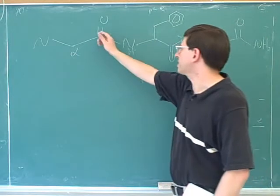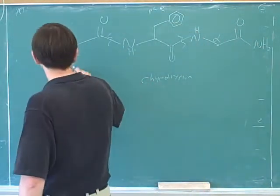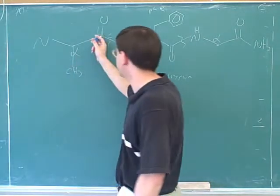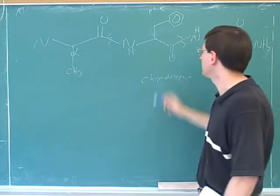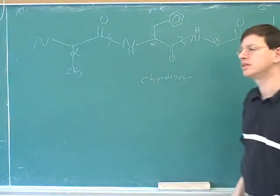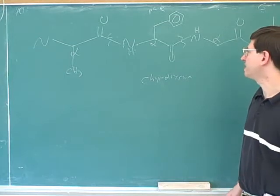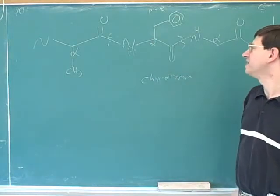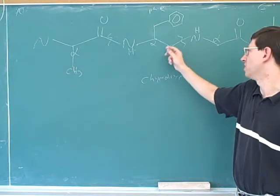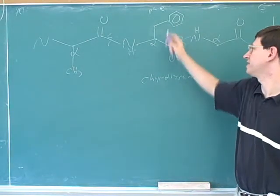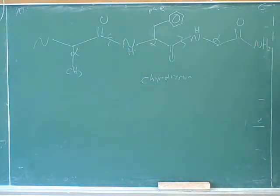This carboxy carbon belongs to a different amino acid. Let's say this is alanine — this is the carboxy carbon for alanine. But this is the carboxy carbon for phenylalanine, because it would be too far to the left otherwise. This is why I hope you've been labeling all the alpha carbons: it makes it very easy to find the carboxy carbon, because the carboxy carbon is attached to the alpha carbon. So the carboxy carbon for phenylalanine must be the carbon attached to phenylalanine's alpha carbon.